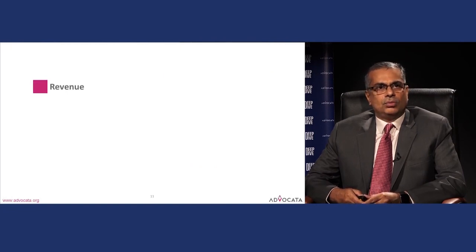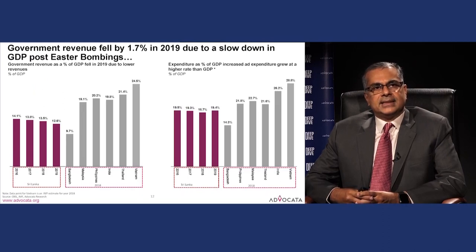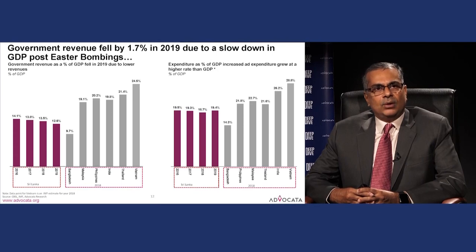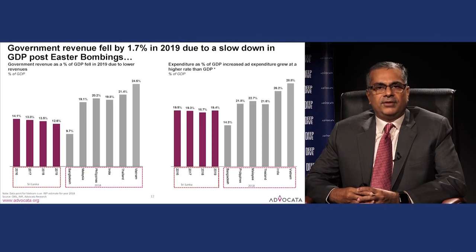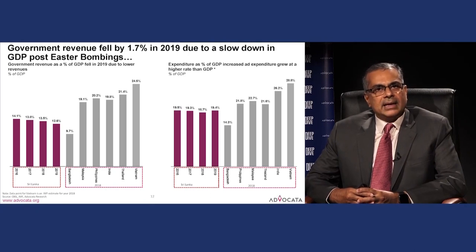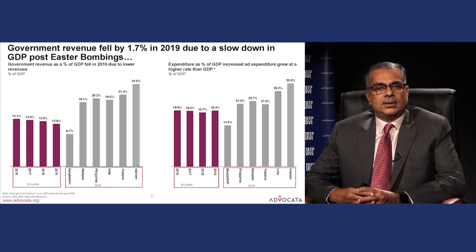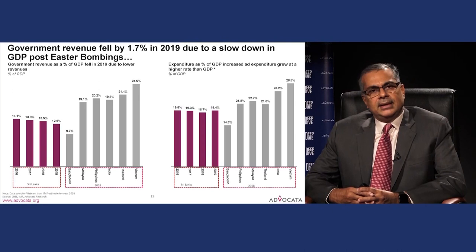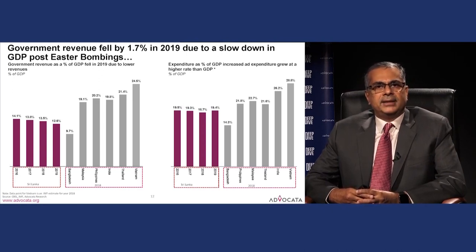Looking at revenue performance: last year it went down despite efforts a few years ago to increase it, compounded by a large economic shock affecting discretionary spending. Except for poorer countries like Bangladesh, most regional peers collect significantly higher revenue than we do. However, relative to expenditure as a share of GDP we actually perform better than regional peers. In conclusion, the primary balance problem is mainly an issue of declining revenue rather than excessive spending.